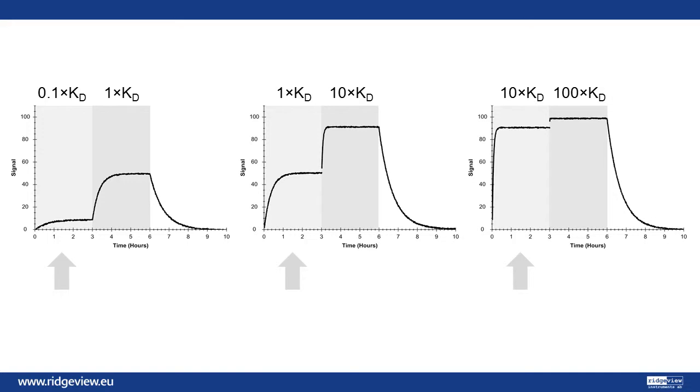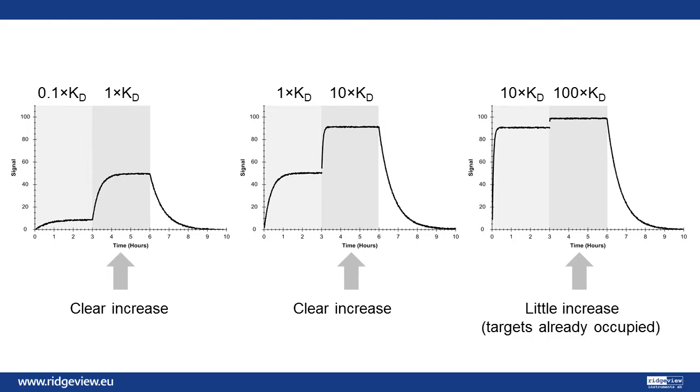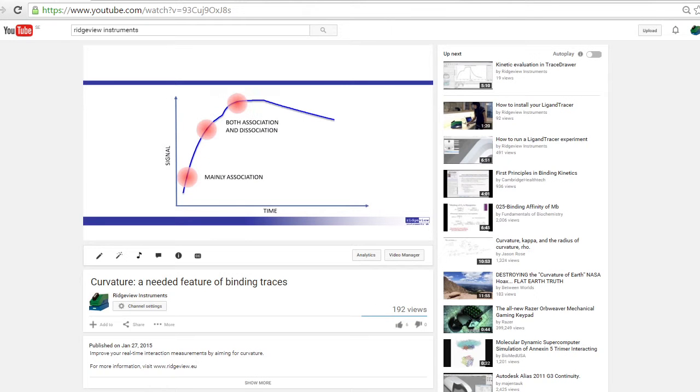After equilibrium had been reached, the concentration was increased 10 times. With the two lowest concentrations the signal clearly increased. With 10 times the affinity, most of the targets were already occupied with the first concentration, so the signal barely increased further. You can learn more about real-time binding curves in another video from us.